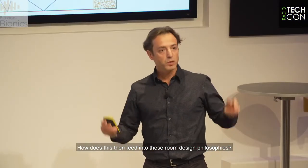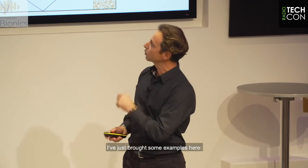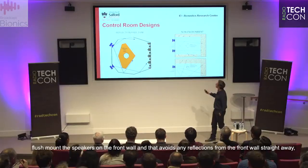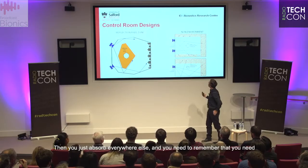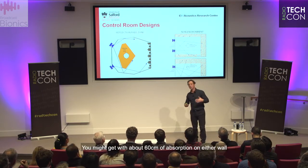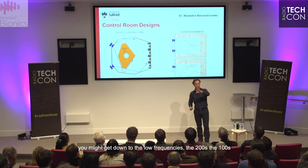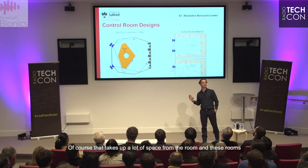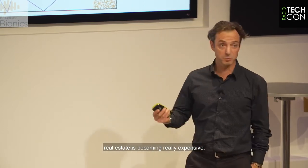How does this feed into room design philosophies? There are a number published in the literature. On the right is the non-environment room — a simple idea: you flush-mount the speakers in the front wall, avoiding front-wall first-order reflections, then absorb everywhere else. You need very bulky absorption — around 60 centimetres on each wall — to operate down to 100–200 Hz, which is wavelength-dependent. That takes up a lot of space, making these rooms lose studio footprint. Real estate is becoming expensive, and these rooms also sound oppressive — almost anechoic — which isn't a pleasant working environment.